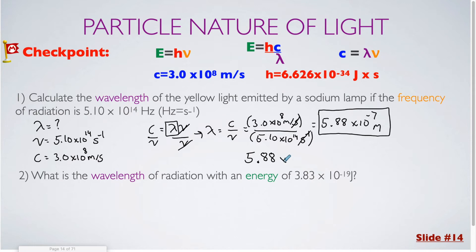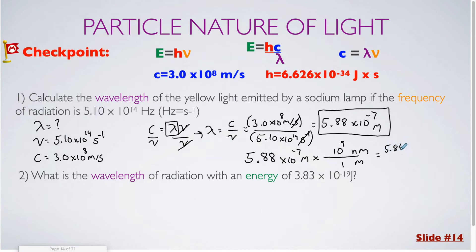So I have 5.88 times 10 to the negative 7th meters, and I'm trying to convert this to nanometers. Meters will go on the bottom so the two units cancel, and nanometers will go on top. Meters is larger, so that gets the 1, and the conversion factor for nano is 10 to the 9th. Because this is multiplication with scientific notation, I would add my exponents. This comes out to 5.88 times 10 to the second nanometers, or 588 nanometers. Both of these answers mean exactly the same thing, just in different units.